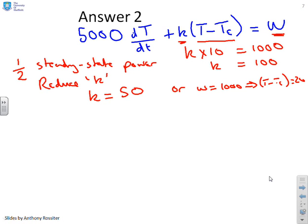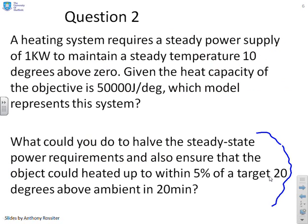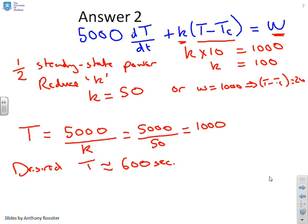What was the next part of the question? It said alright we want to see how quickly this will heat up. So we're now looking at the time constant. I've got the time constant T equals 5000 over K which equals 5000 over 50 which equals 1000. Now the desired T was approximately 600 seconds. You'll remember we said oh let's just check out do I mean 60 seconds? 20 minutes. 20 minutes. Oh no so I need 400 seconds.